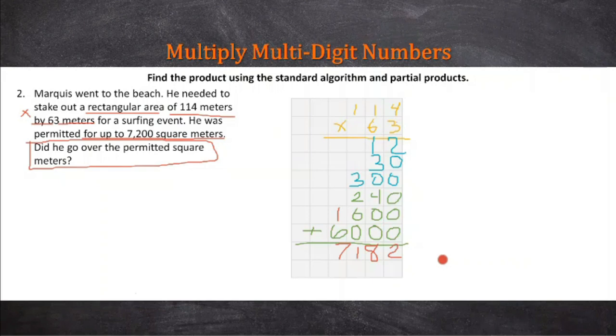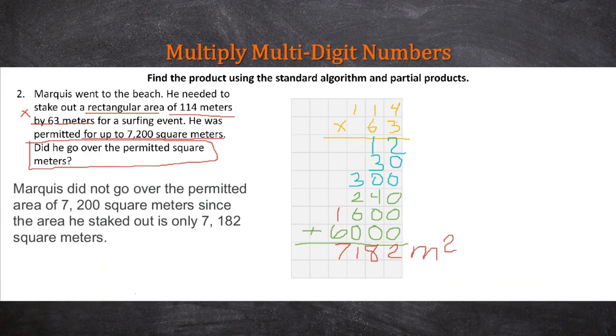But is that the answer? No. We have to write down what the answer is and use the proper units. Here the proper units is meters, and I can put this as meters squared. Marquis did not go over the permitted area of 7,200 square meters, since the area he staked out is only 7,182 square meters, which is less than 7,200.